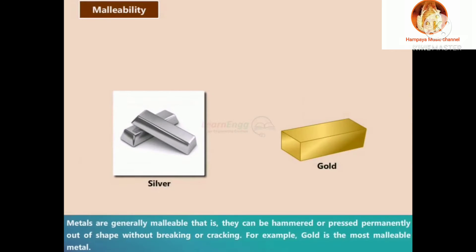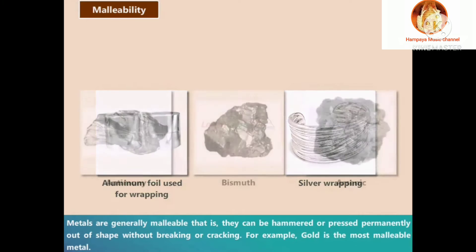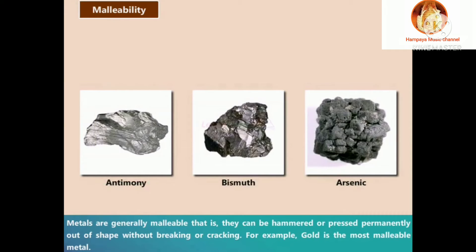Malleability: Metals are generally malleable, meaning they can be hammered or pressed permanently out of shape without breaking or cracking. For example, gold is the most malleable metal. Aluminium foil and silver are used for wrapping. Metals like antimony, bismuth, and arsenic are also malleable.